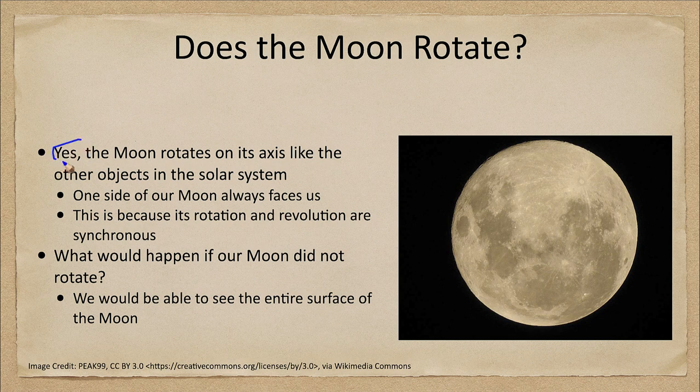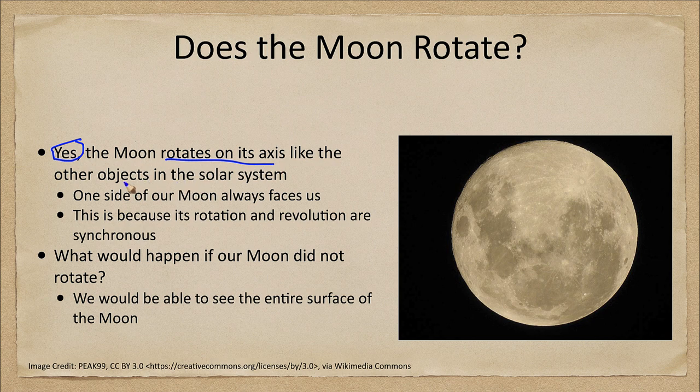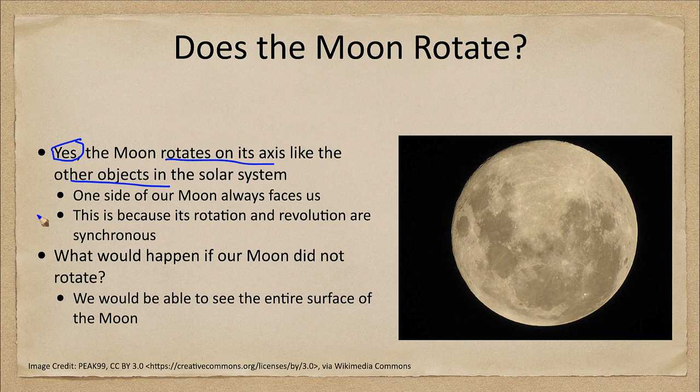So does the moon rotate? Well, let's give our quick answer here. Yes, the moon rotates on its axis just like other objects in the solar system. Every object in the solar system rotates on its axis.